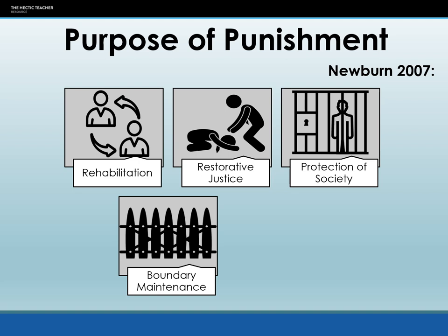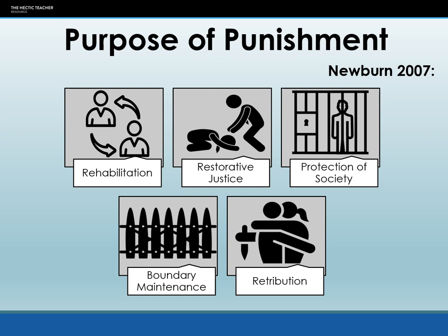The final purpose is retribution — almost like 'just deserts.' Criminals deserve to be punished for their crimes; they've done something bad and there are consequences for your actions. They are reaping what they sow, so to speak. Punishments are the consequence when you act in a way that is criminal or deviant.